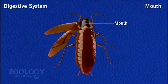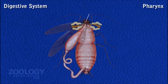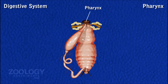Mouth. Mouth is a small opening at the base of the pre-oral cavity and leads into the pharynx. Pharynx. It is short and tubular, and its circular lining is more folded posteriorly.